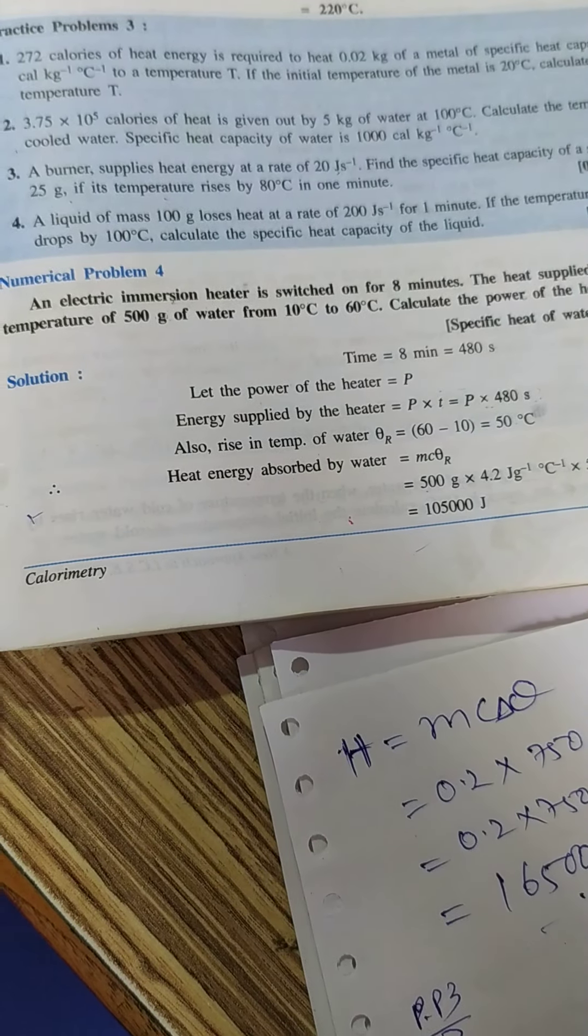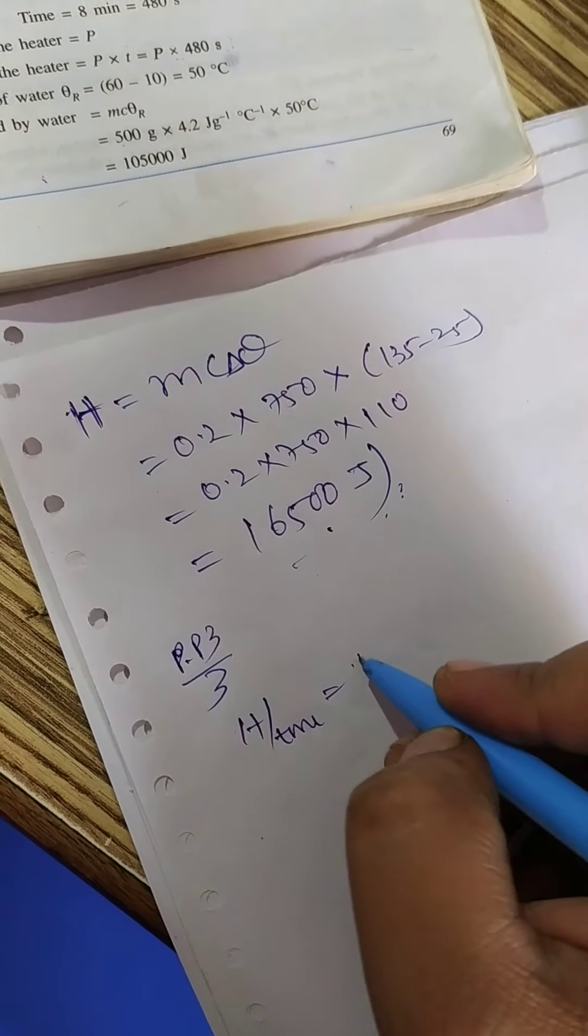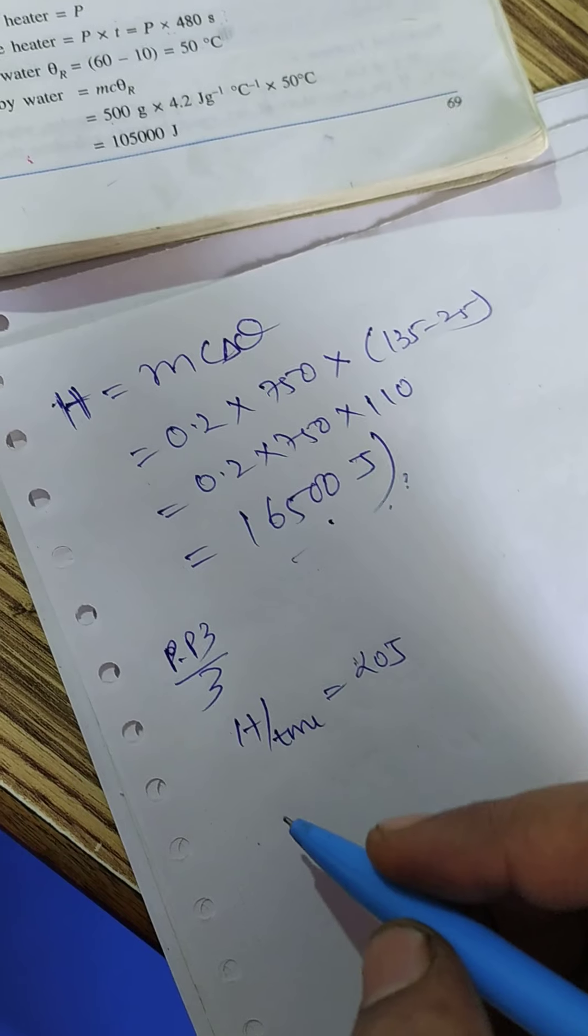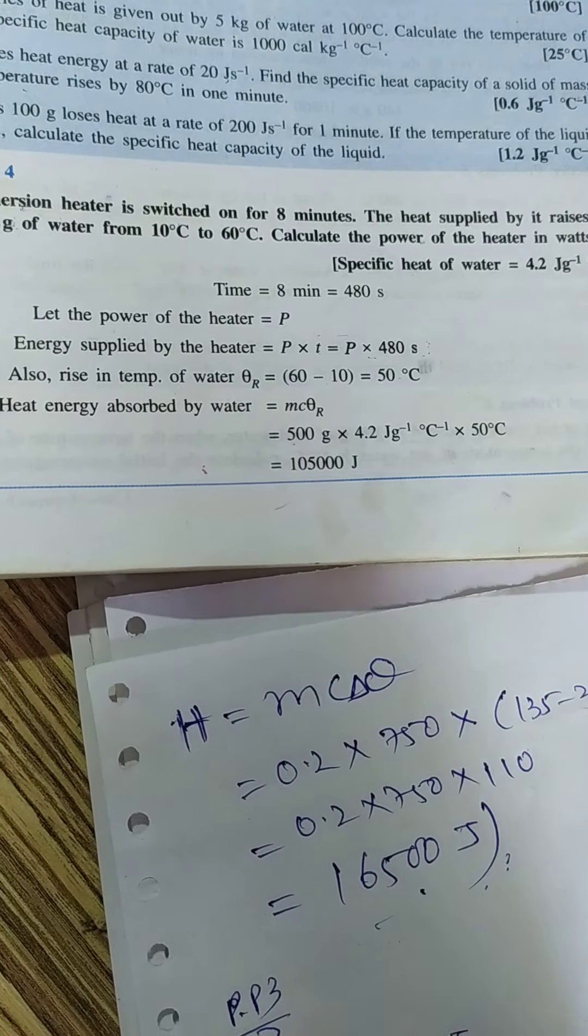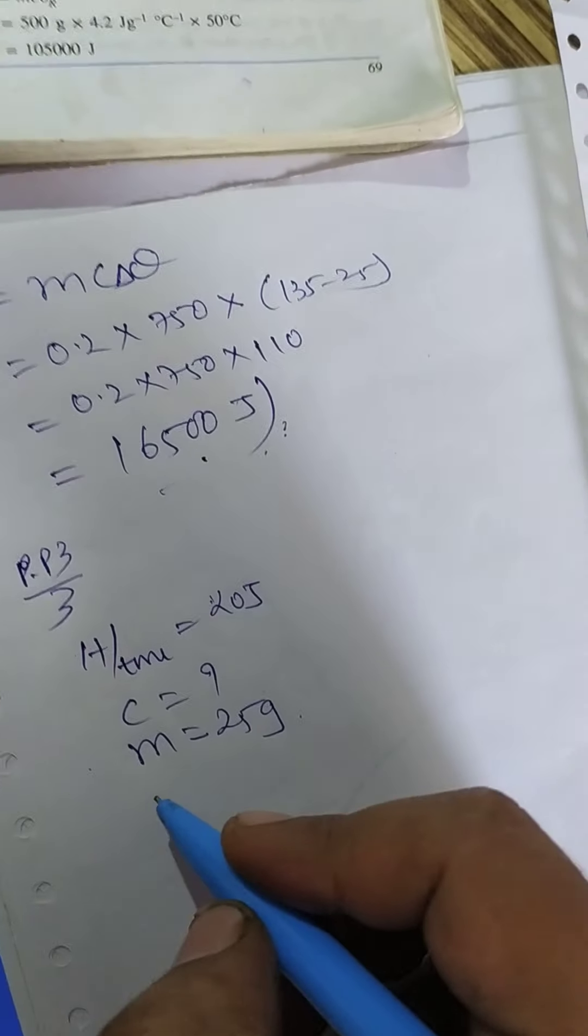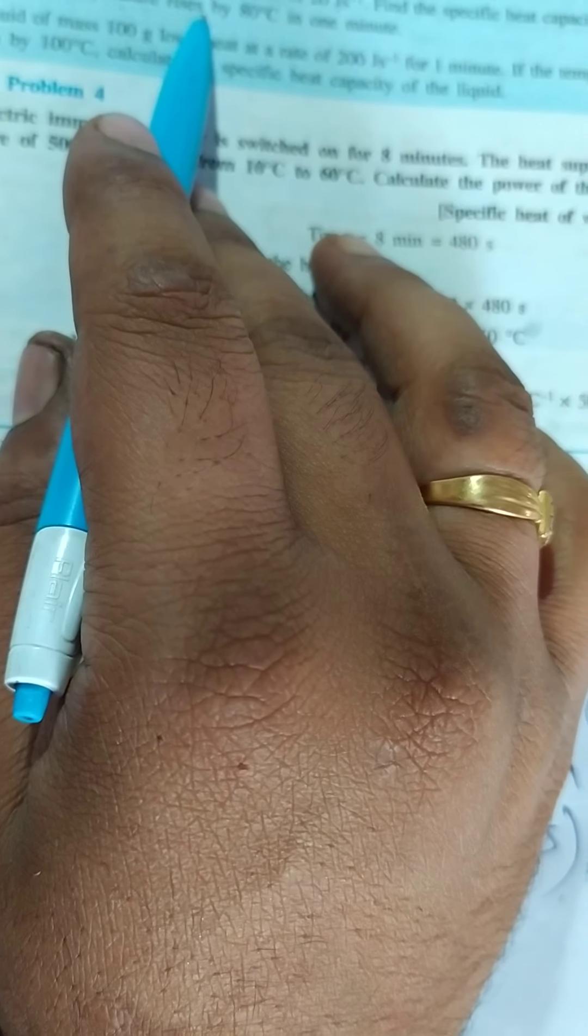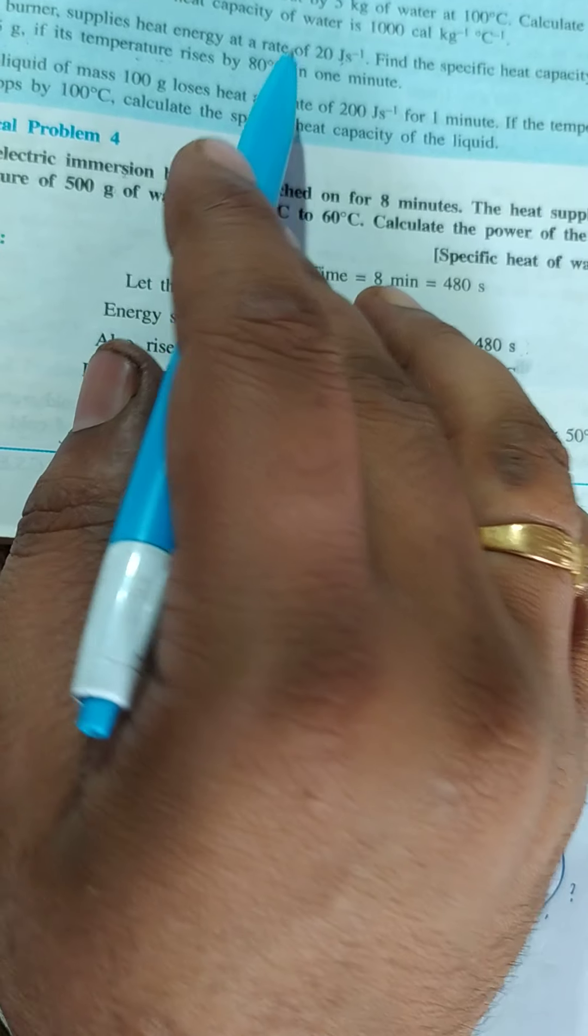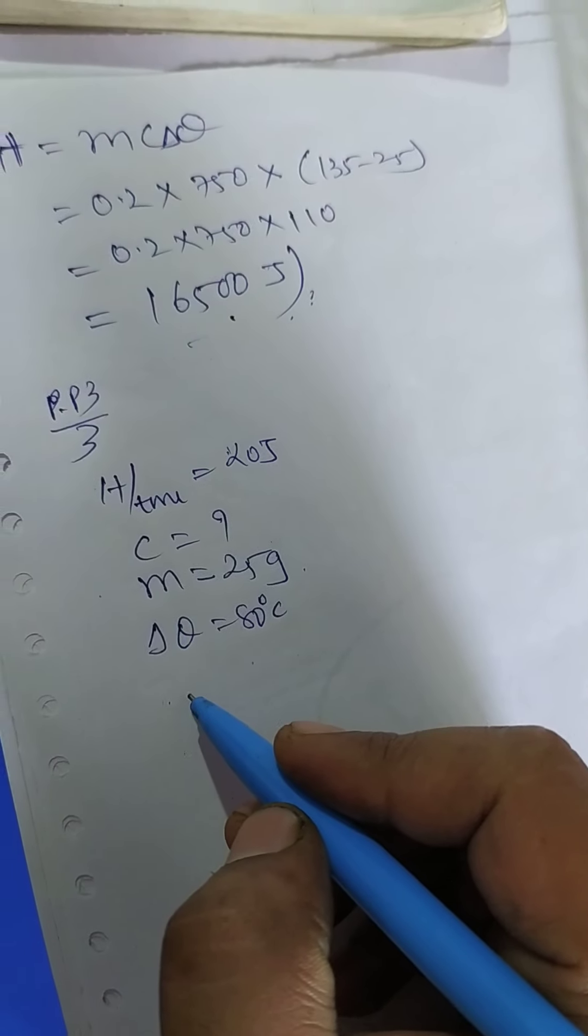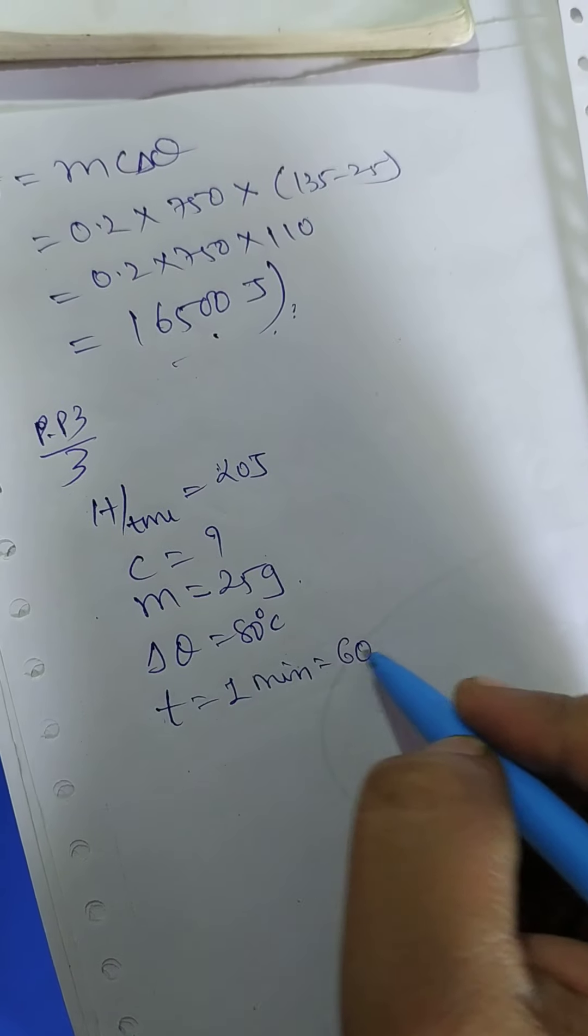Let us write down the given data. The heat liberated per given time is 20 joules per second. So in every second 20 joules of heat is coming out from the burner. Specific capacity is to be calculated. And the substance has mass of 25 grams. And change in temperature is given 80 degree centigrade. Please see here the words. If its temperature rises by 80 degree centigrade. So these words clearly state that change in temperature is 80 degree centigrade. And all this happens in a time 1 minute converting this into seconds.